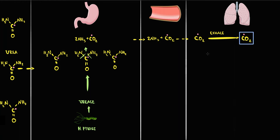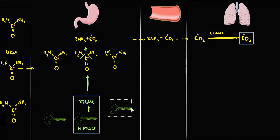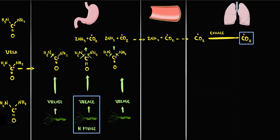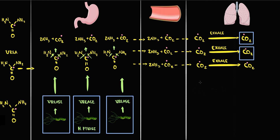By assessment of radiolabeled carbon dioxide molecules in the breath, we can determine how many Helicobacter pylori organisms are present in the stomach. The amount of radiolabeled carbon dioxide in the breath is directly proportional to the amount of Helicobacter pylori bacteria in the stomach. If there are many Helicobacter pylori bacteria, there is a massive amount of urease, resulting in massive hydrolysis of urea into radiolabeled carbon dioxide and ammonia. We then absorb this massive amount of carbon dioxide into the blood and exhale a significantly high amount of radiolabeled carbon dioxide. High values of radiolabeled carbon dioxide are the marker of a massive invasion by Helicobacter pylori.